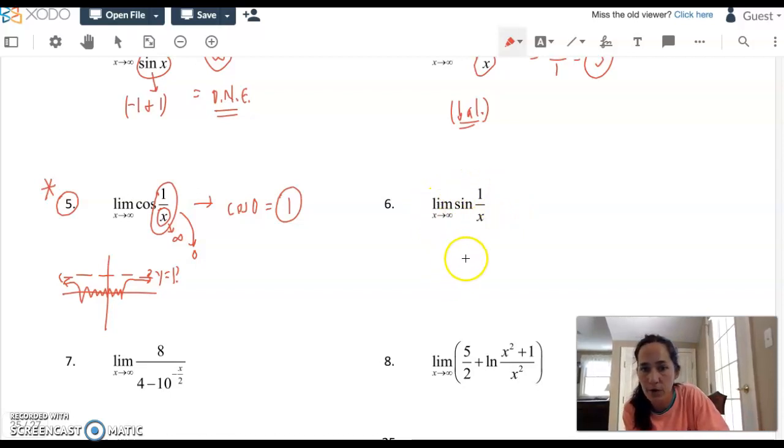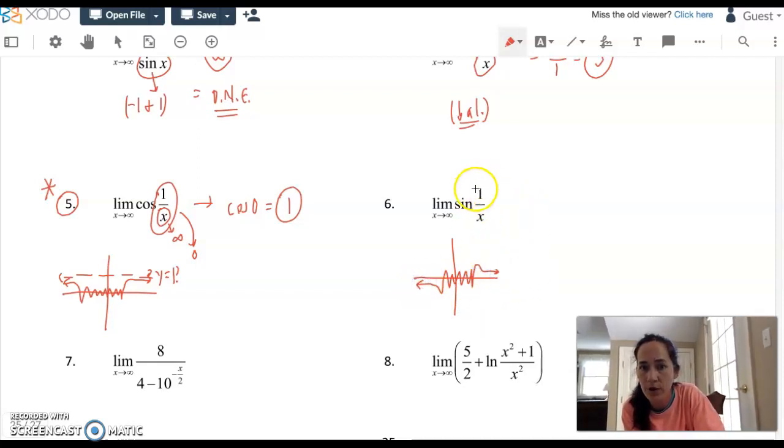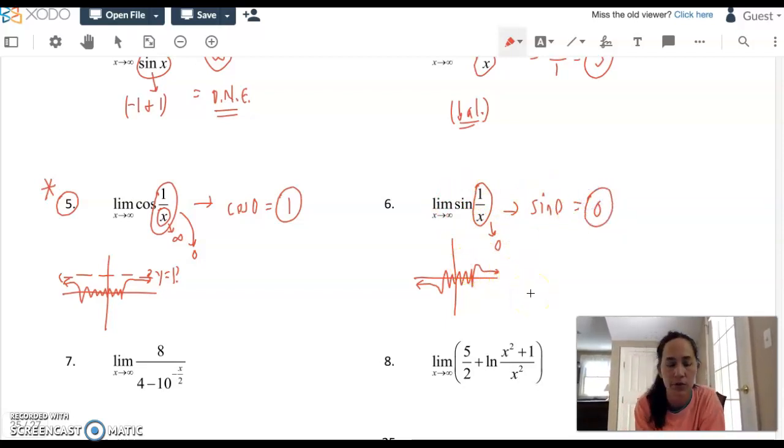Now we can get a limit for sine of 1 over x. Sine of 1 over x does have that infinite oscillation in the middle. 1 over x, the whole fraction, is going to go to 0. So this whole entire expression approaches the sine of 0, which is 0, and the graph confirms it. You're approaching 0 to the far right.